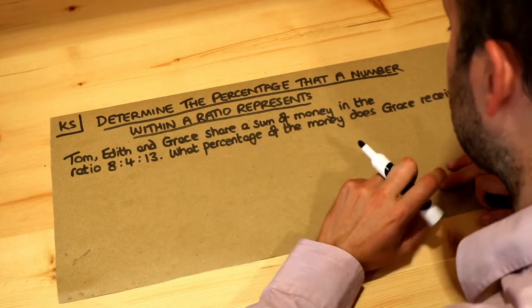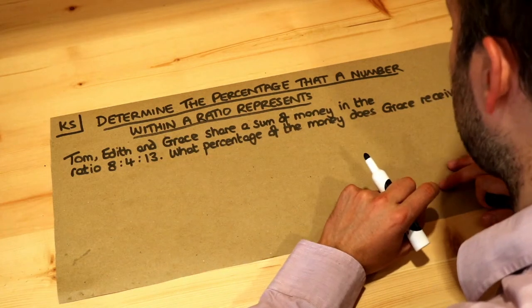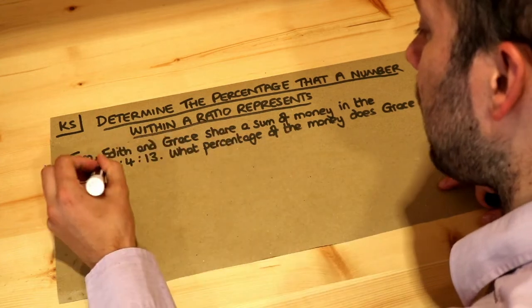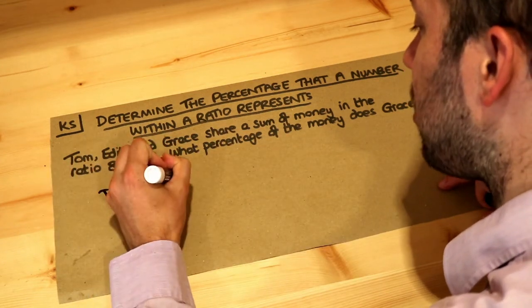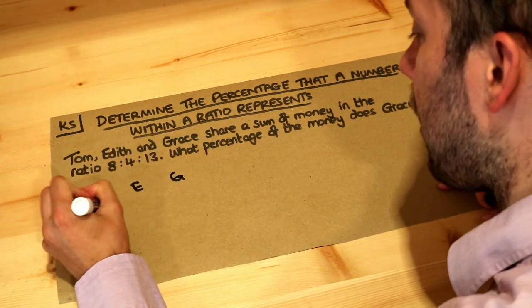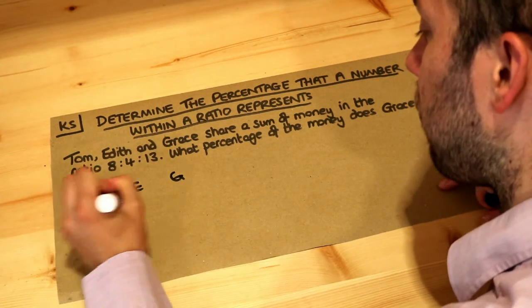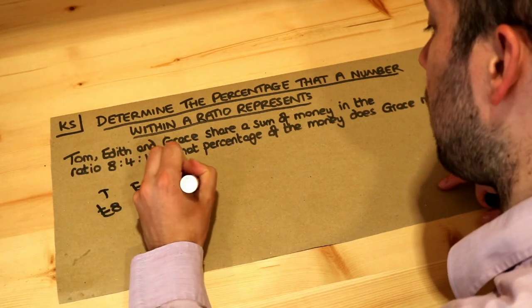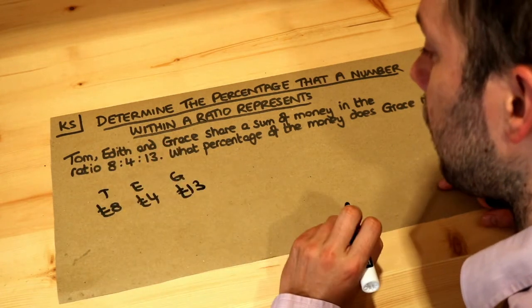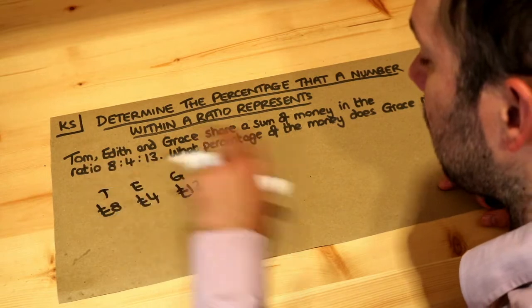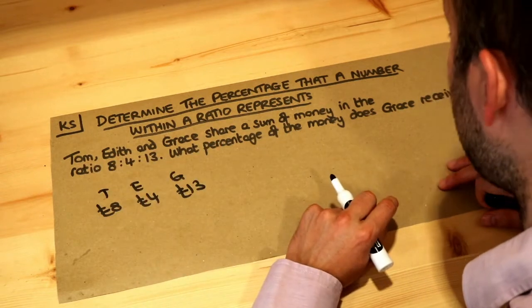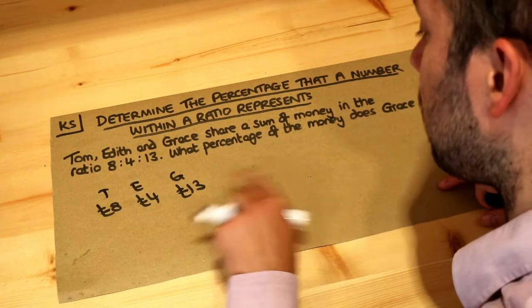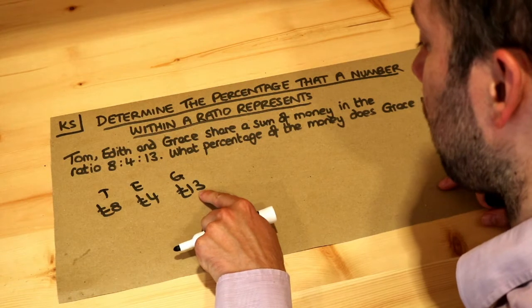We want to work out what percentage of the money Grace receives. Let's say Tom, Edith and Grace did actually receive eight pounds, four pounds and 13 pounds — whatever currency you like — because that would certainly be in the ratio 8 to 4 to 13. Then we can find out what percentage of the money Grace receives.